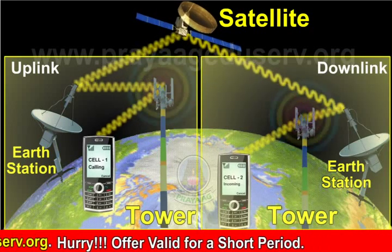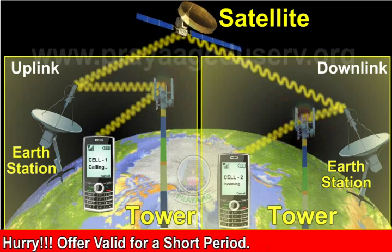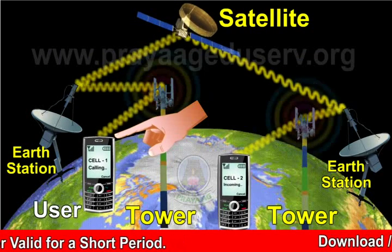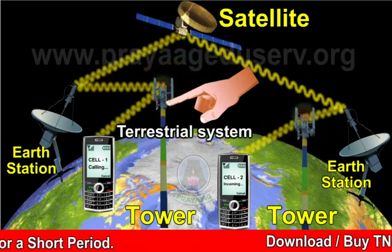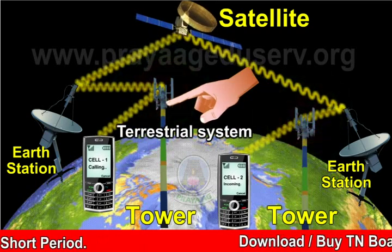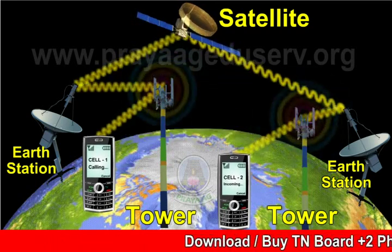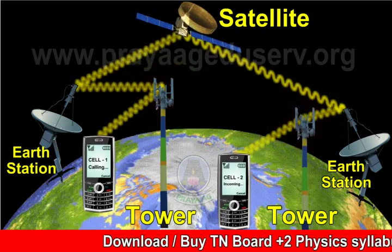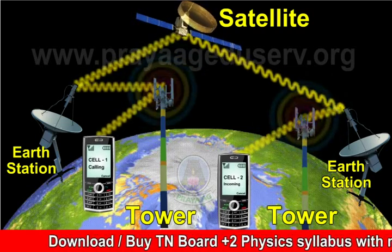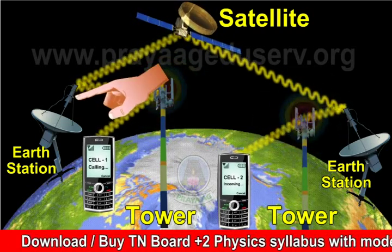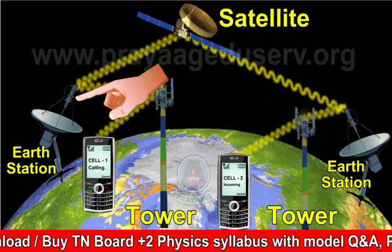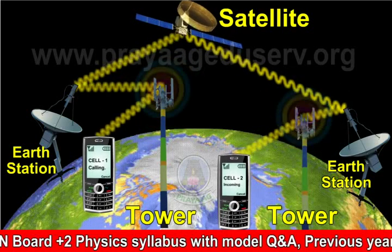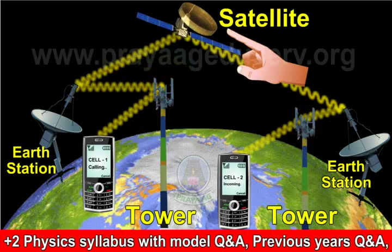A satellite in space links many earth stations. The user is connected to the earth station through a terrestrial network. This network may assume various configurations including a telephone switch or a dedicated link to the earth station. Signals generated by the user are processed and transmitted from the earth station to the satellite.